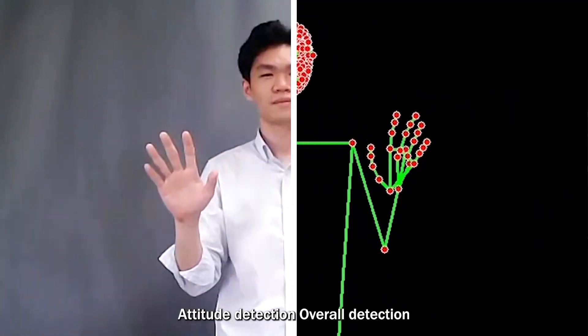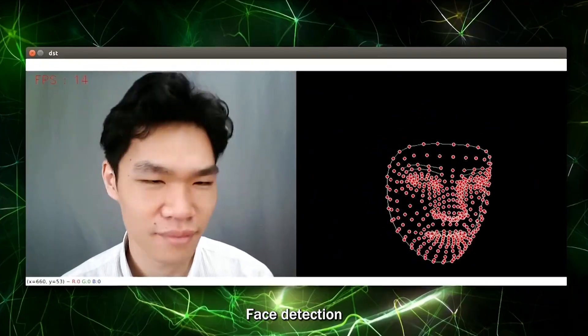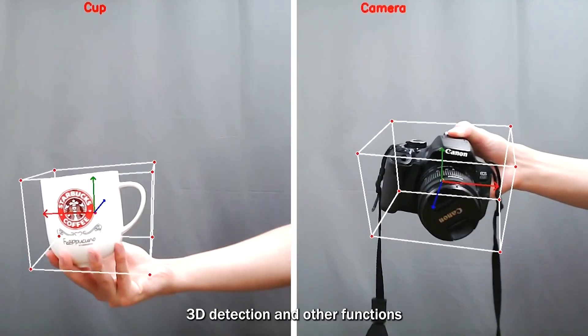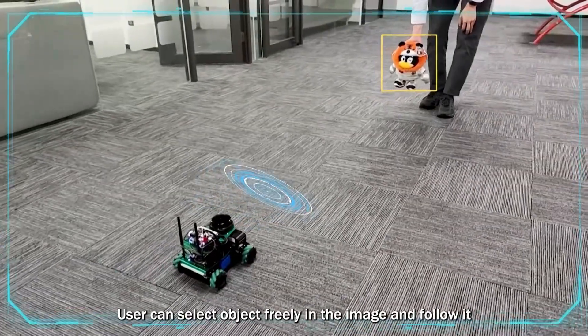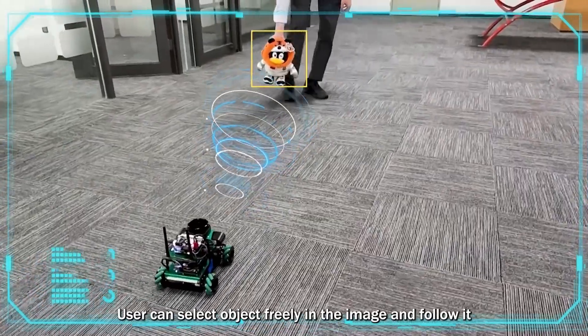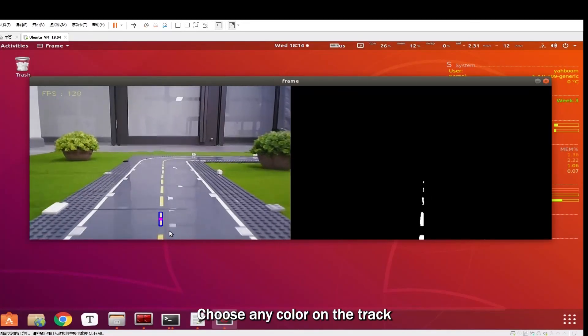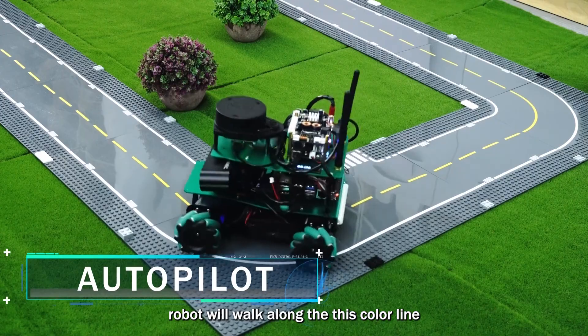Based on KCF algorithm and image processing, users can select objects freely in the image and follow them. Choose any color on the track and the robot will walk along with this color line.